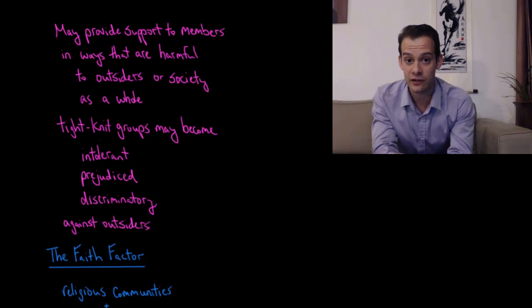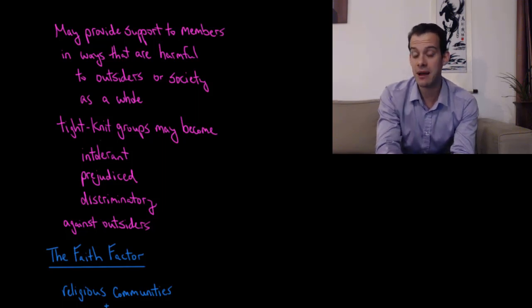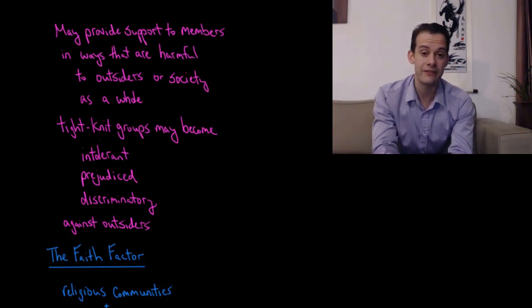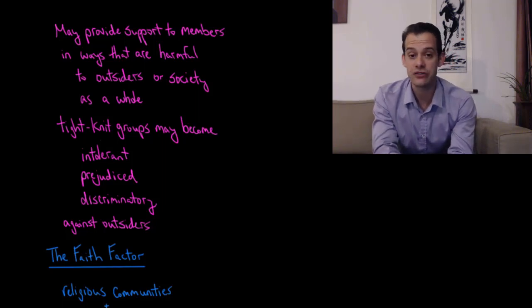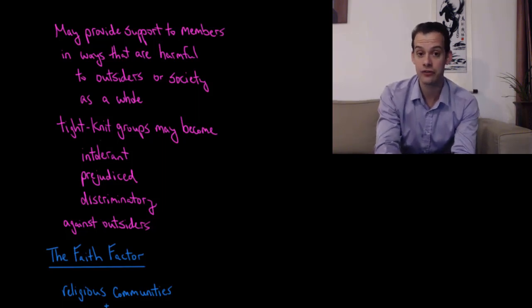So we might have very tight-knit groups that form but these might become intolerant, prejudiced, or even discriminatory against outsiders. So this is one of the dangers of tight-knit groups with high levels of social capital.